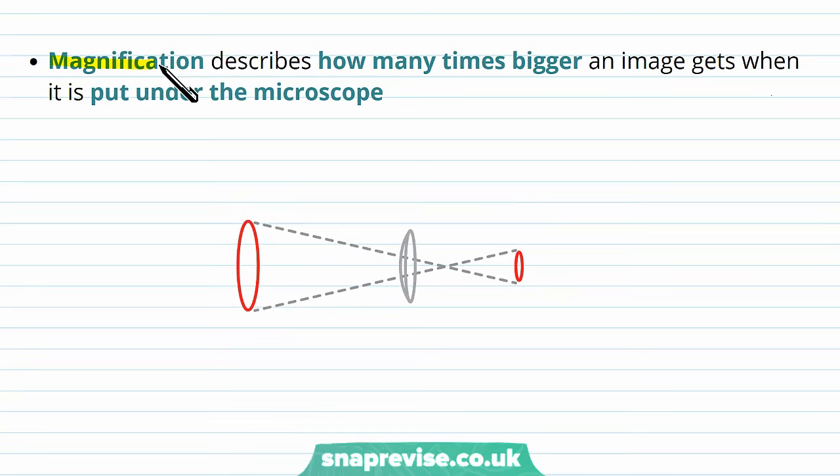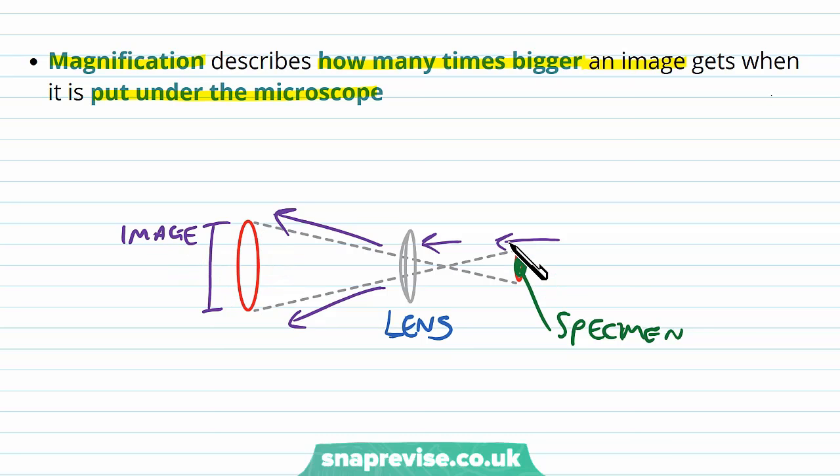So magnification is basically describing how many times bigger something looks when we put it under a microscope. How much bigger the image is than the real thing. For example, say this was our specimen, a cell or something. To the eye, it's too small to see. So what we do is we use a lens, which is a curved glass object which can magnify the specimen to look like a large image. The light goes through the specimen, is passed through the lens, and a large image is made on the other side. The image is bigger than the specimen actually is in real life, and that's the magnification.